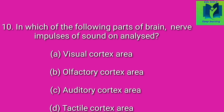In which of the following parts of the brain are the nerve impulses of sound analyzed? Option A: visual cortex area. Option B: olfactory cortex area. Option C: auditory cortex area. Option D: auditory cortex area. Answer: auditory cortex area.